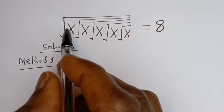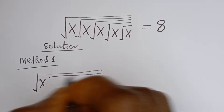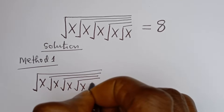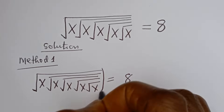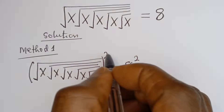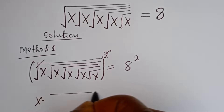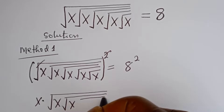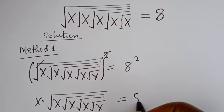We have: square root of S, square root of S, square root of S, square root of S, and square root of S is equal to H. Let's square both sides of this equation. This square gives H squared. We cancel the outer square root, and we have S multiplied by the square root of S, square root of S, square root of S, and square root of S is equal to H squared.